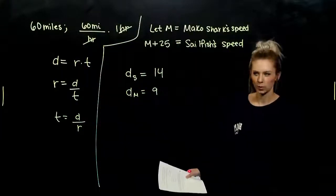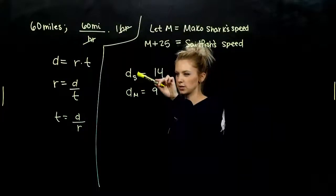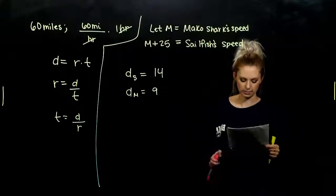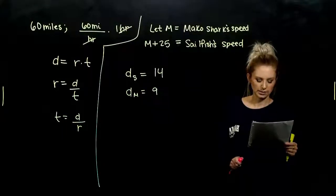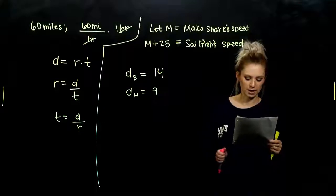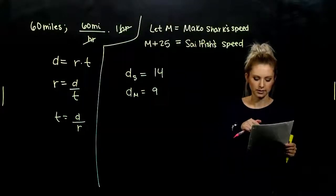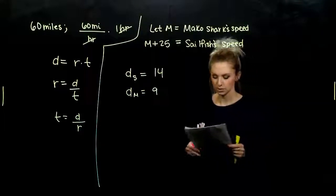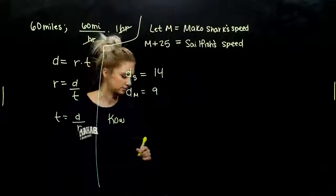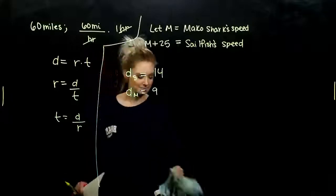So I have information about their rates and I have information about the distances. Do we know anything about the times? So the second to last sentence, let me read that one to you again. A sailfish can swim 14 miles in the same time that a mako shark can swim nine. So I know that at these rates, at these rates, their times are equivalent.